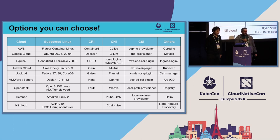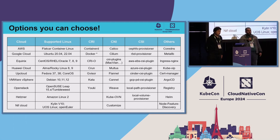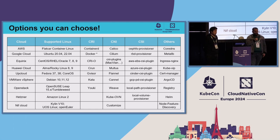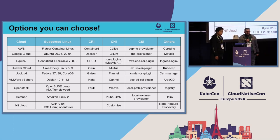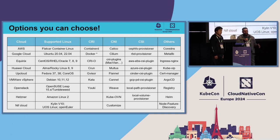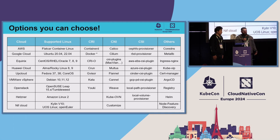For CSI we support plugins like AWS EBS, vSphere, and Ceph. You can also use KubeSpray to deploy add-ons when you create a cluster — you can toggle on and off things like Ingress Nginx, cert-manager, ArgoCD, Helm, a basic Docker registry, and recently we added node feature discovery. KubeSpray is flexible — you don't get all of this by default; it's configurable and up to you to choose what you need.